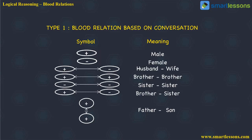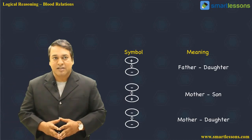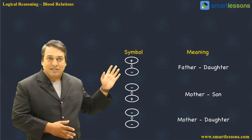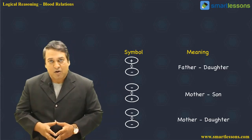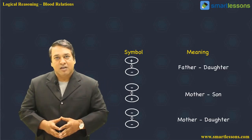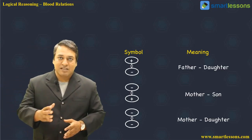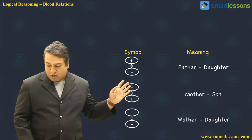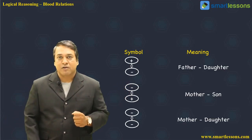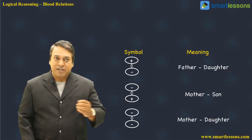Plus and minus at the same level could be a brother-sister relationship or husband-wife. When a plus goes downward to a plus, it's a father-son relationship. Plus going downward to minus is a father-daughter relationship. Minus and plus could mean a mother-son relationship, and minus-minus could be a mother-daughter relationship. These symbols can vary from exam to exam and question to question, and the question will specify what each symbol means.